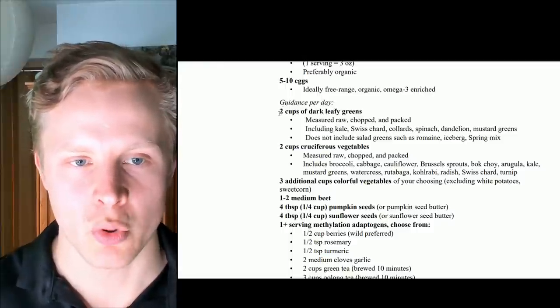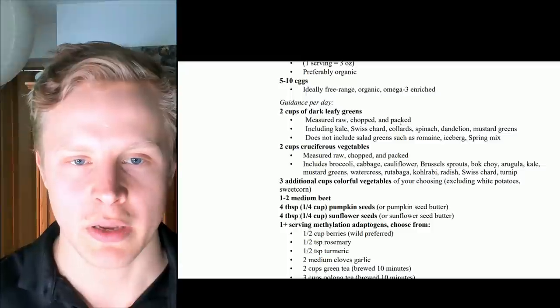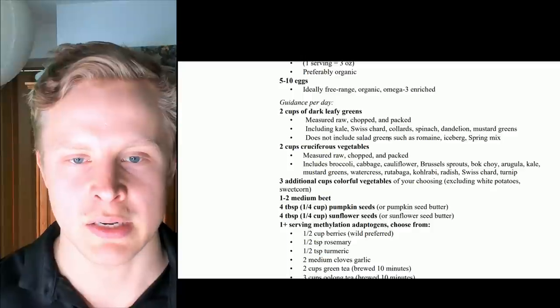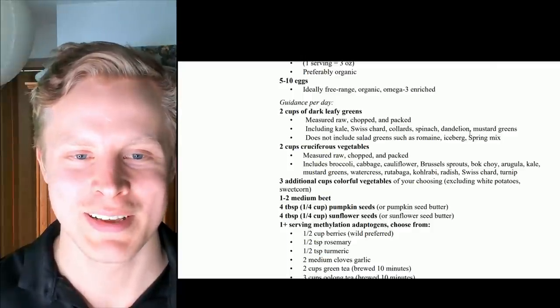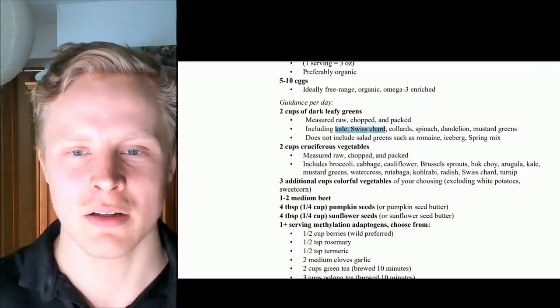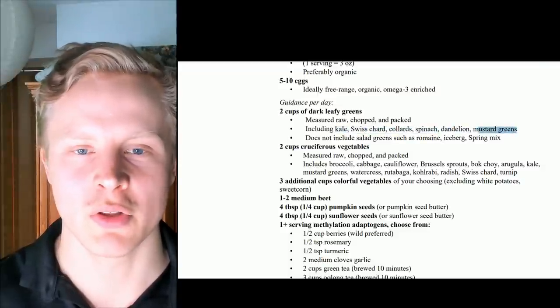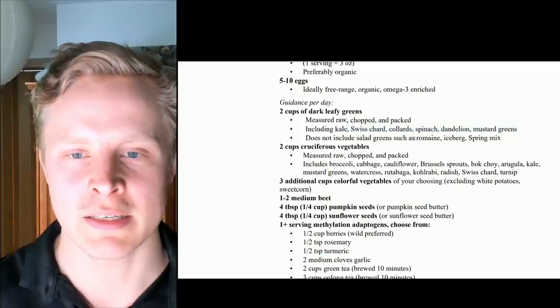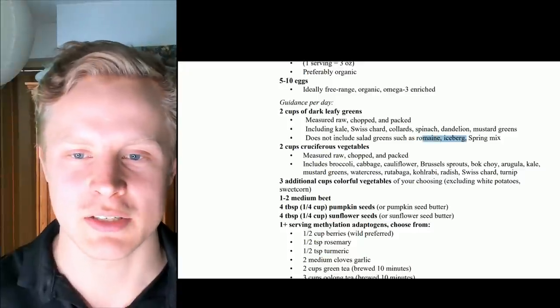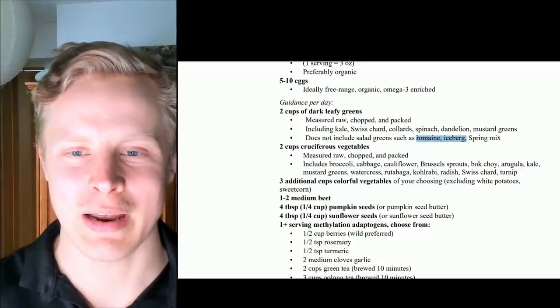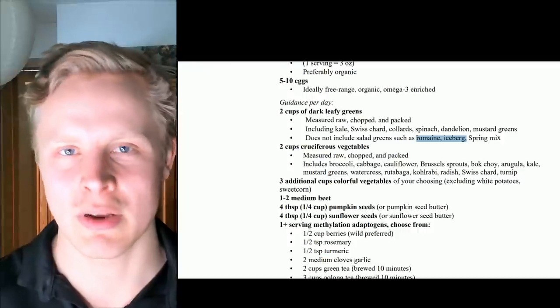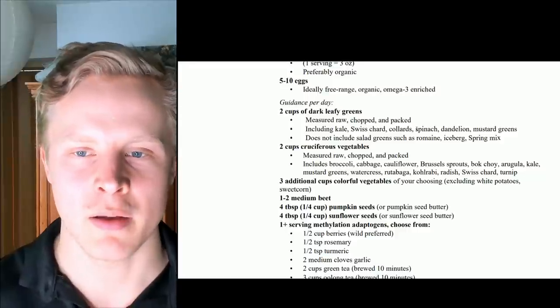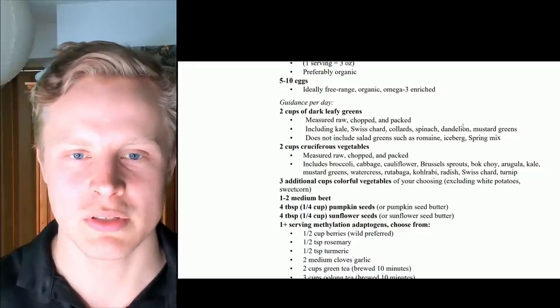Guidance per day, the foods that they ate every day, were two cups of dark leafy greens, chopped packed, including kale, Swiss chard, collard, spinach, dandelion, mustard greens. It doesn't include salad greens such as romaine, iceberg, and spring mix. So all these dark leafy greens, kale, Swiss chard, they're very high in all these methyl donors. And generally considered much more nutrient dense than romaine or iceberg lettuce. Because iceberg lettuce is just greens with a little bit of water. It doesn't have really nutrients. Whereas kale and Swiss chard, they have these dark pigments and beneficial effects on the microbiome and also these methyl donors like folate.